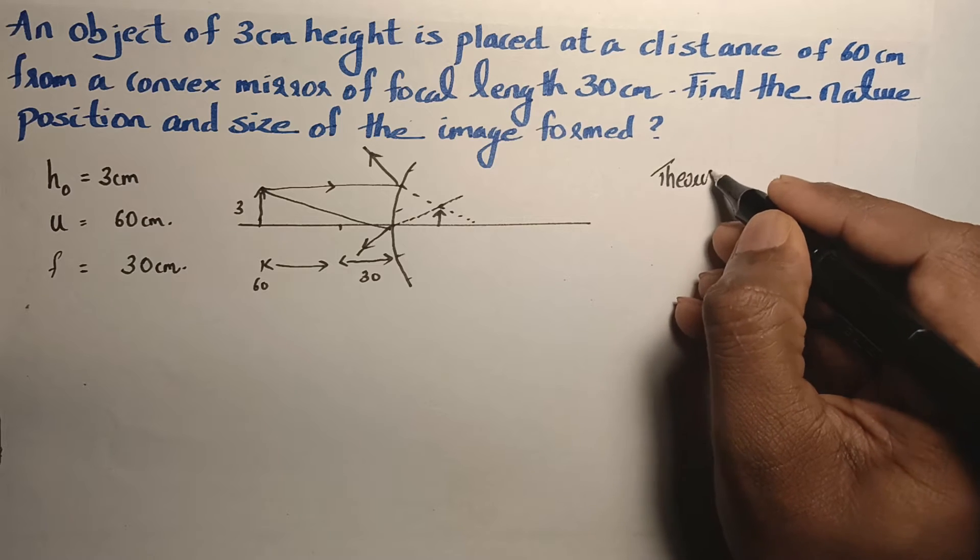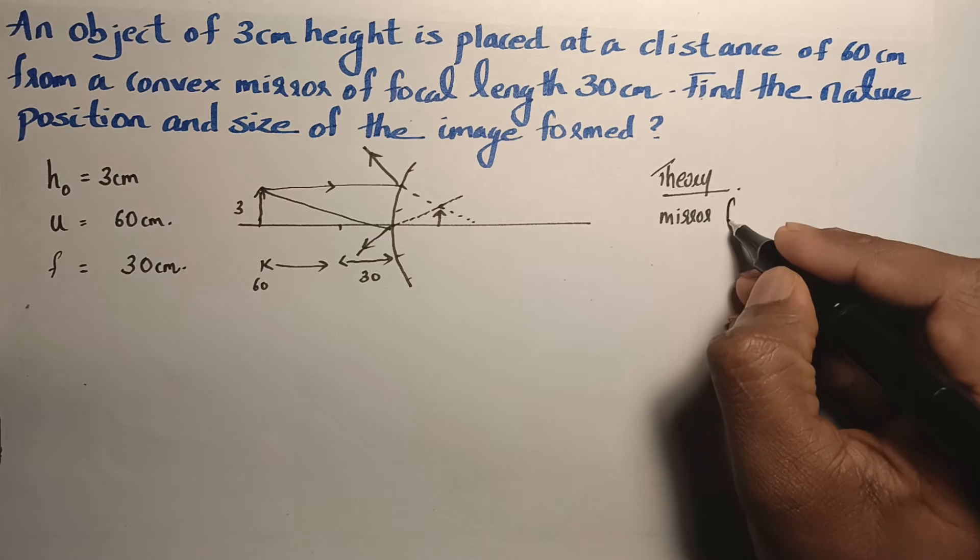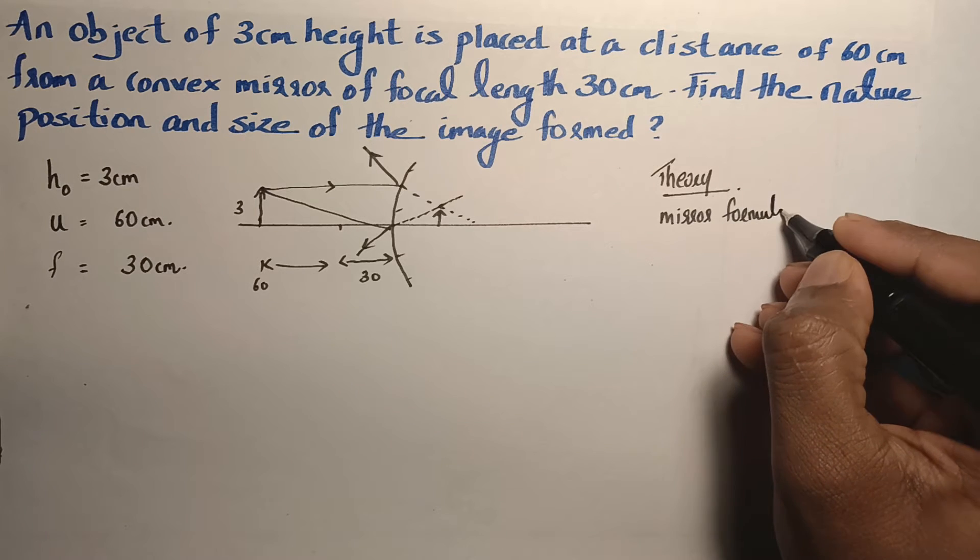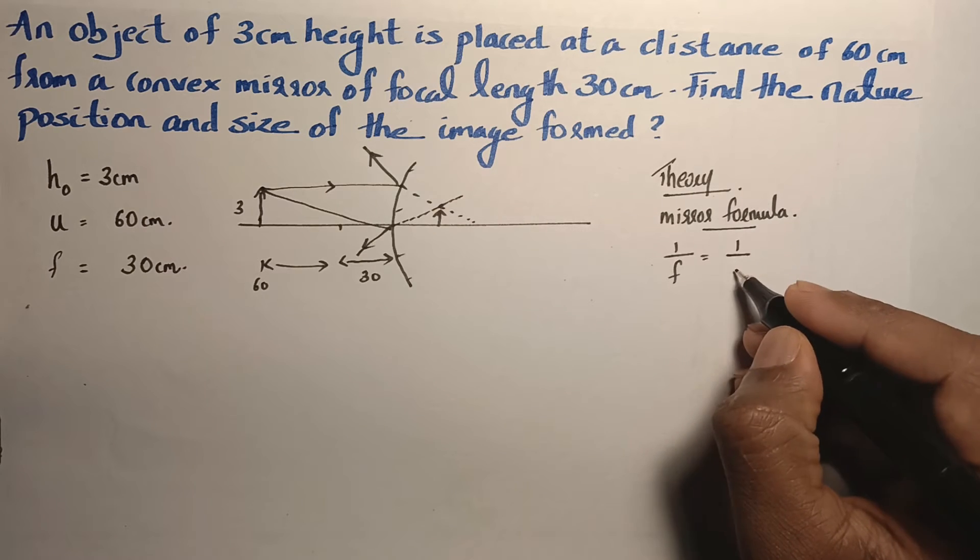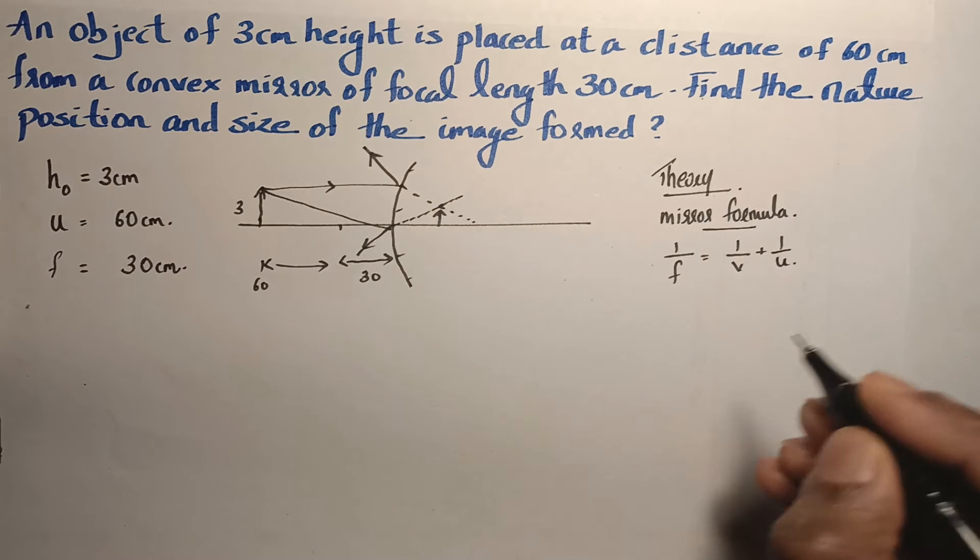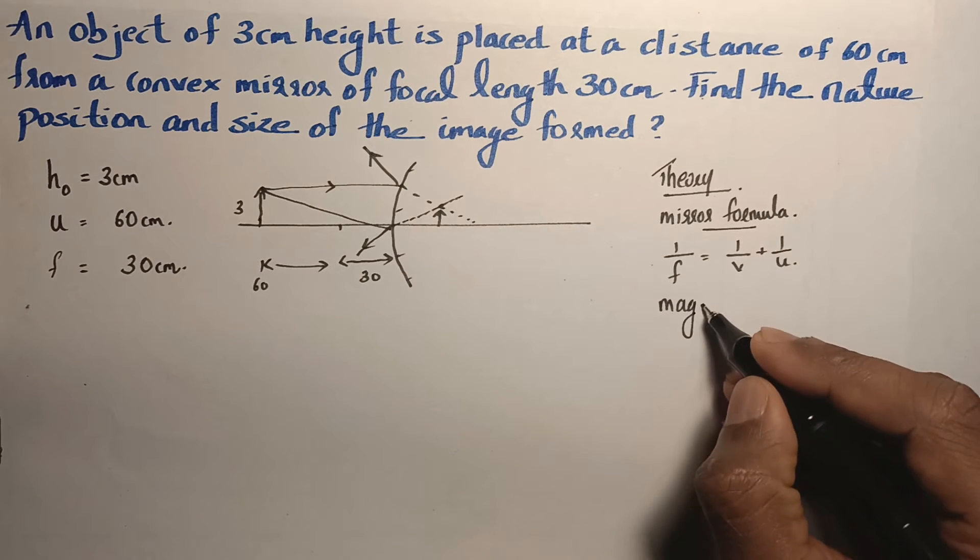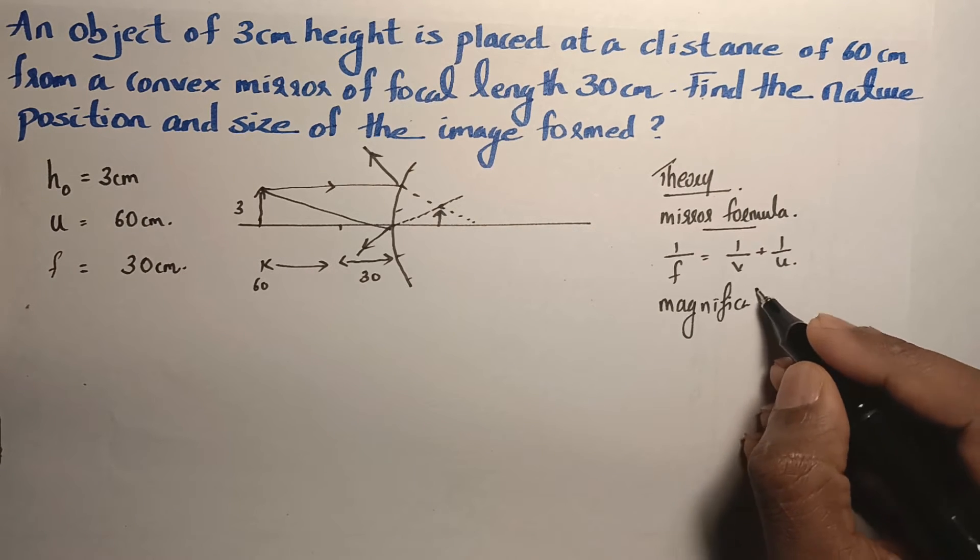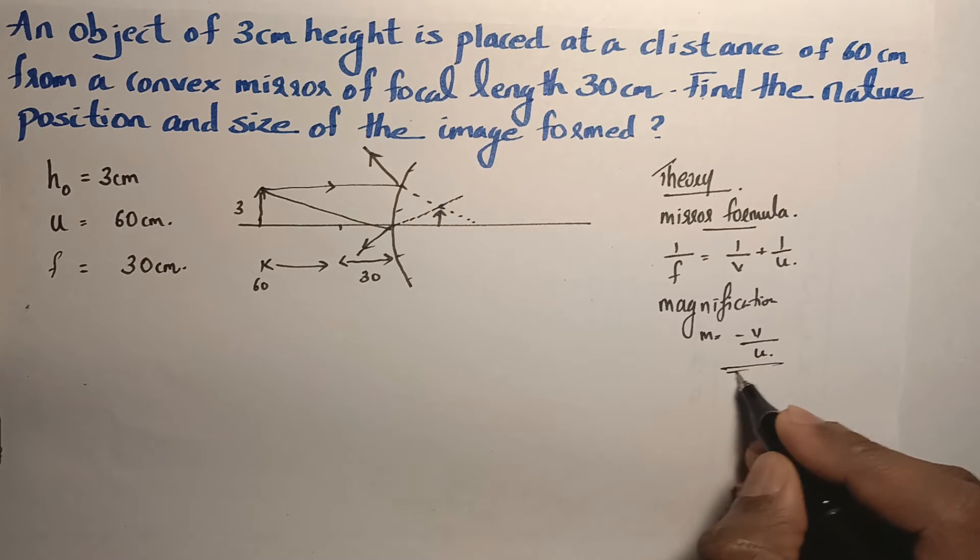The theory to this question is two different equations. One is mirror formula. 1 by F is equal to 1 by V plus 1 by U. And in order to explain the nature of the image, we need magnification. Magnification M is equal to minus V by U.